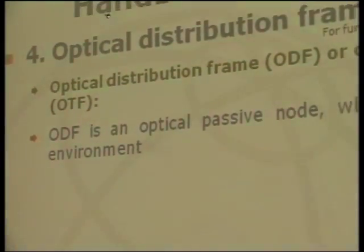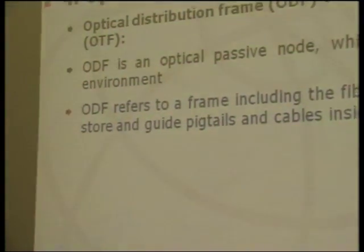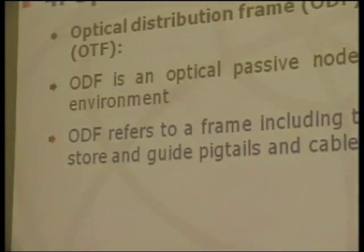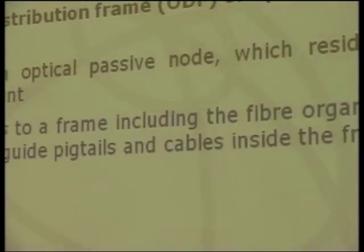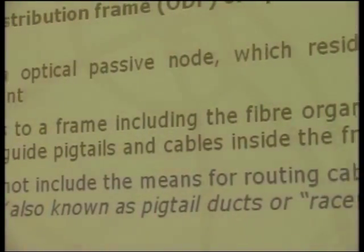The topic here is optical distribution frames. The detailed information about this subject is on L50. This is also called an optical termination frame. It's an optical passive node that resides in the central office environment. It offers a way to organize fibers and store pigtails and guide the cable inside the frame. The term ODF does not include routing cables and pigtails outside the frame; that's known as pigtail ducts or a raceway system.